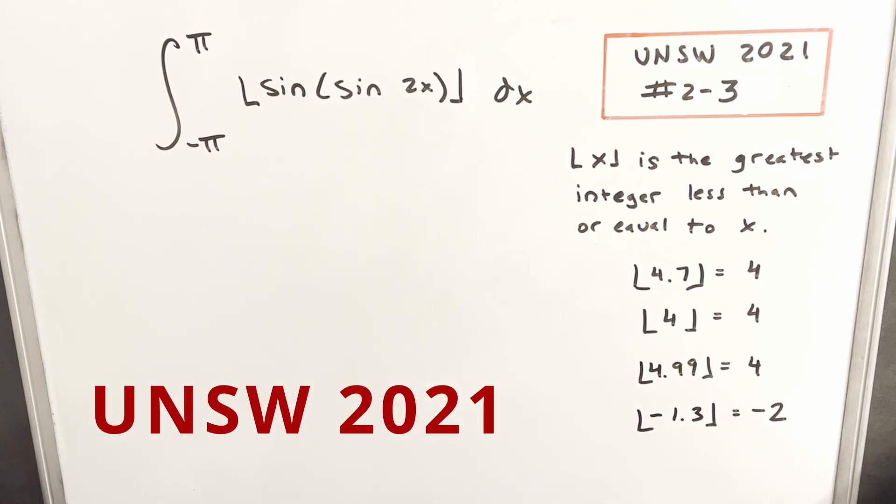Okay, today we're going to look at another integral on the board here. This one's from the UNSW integration bee 2021, from round two, problem three. We have the integral from negative π to π of the floor function of sin(sin 2x) dx.